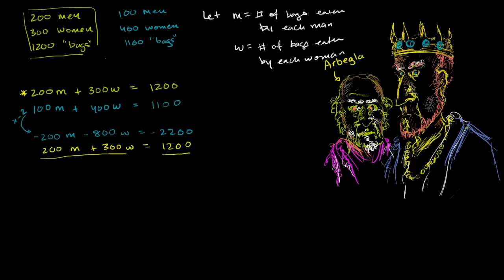So let's see what happens. So the good thing is, the whole reason why we multiplied it by negative 2 is so that these two characters cancel out. You add those two together, you just get 0m or just 0. You have negative 800w plus 300w. Well, that's negative 500w. And then on the right-hand side, you have negative 2,200 plus 1,200. So that's negative 1,000. And now this is pretty straightforward. One equation and one unknown, a fairly straightforward equation. We divide both sides by the coefficient of w, multiplying w. So divide by negative 500 on the left. Divide by negative 500 on the right. And we are left with w is equal to 2.